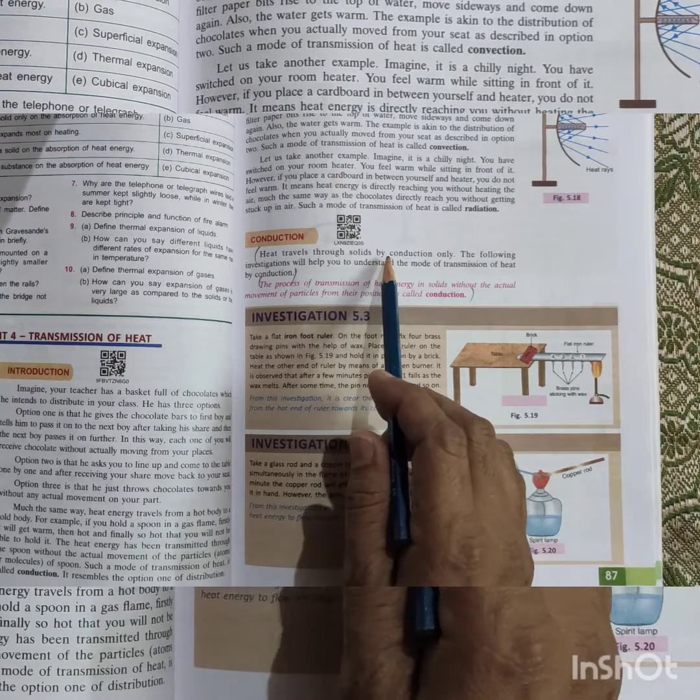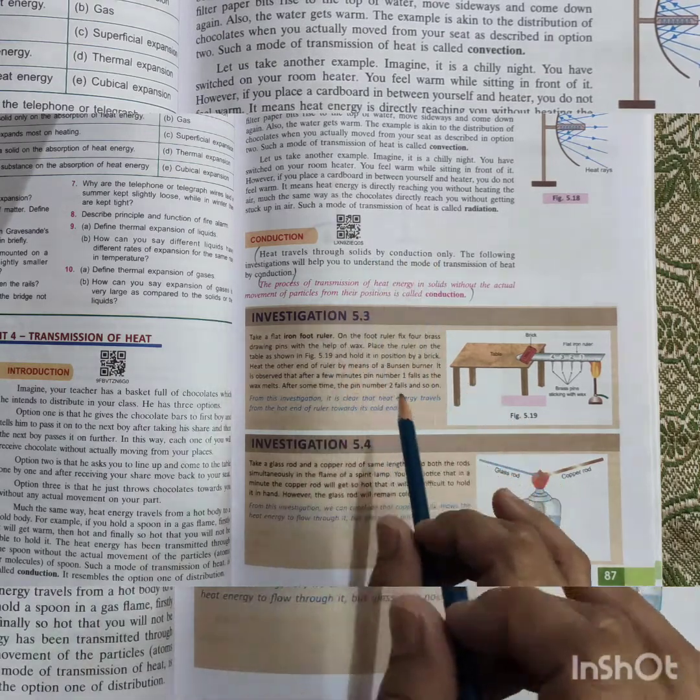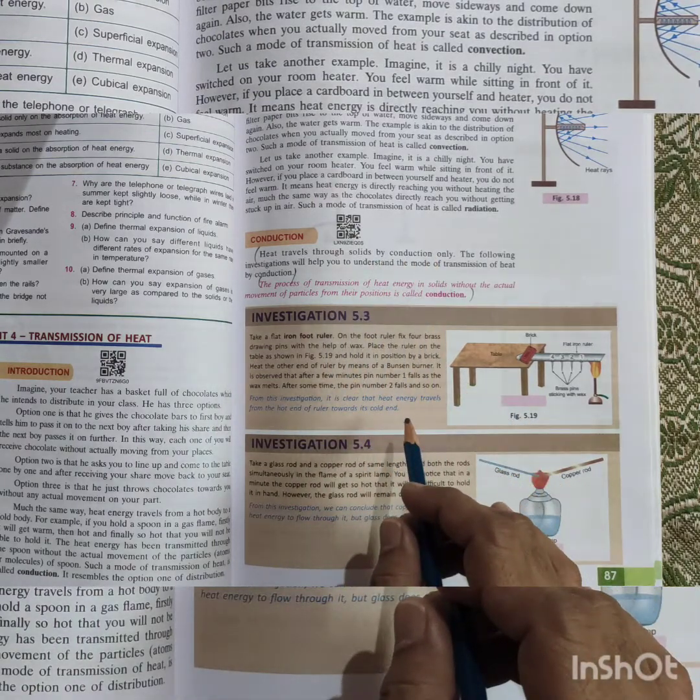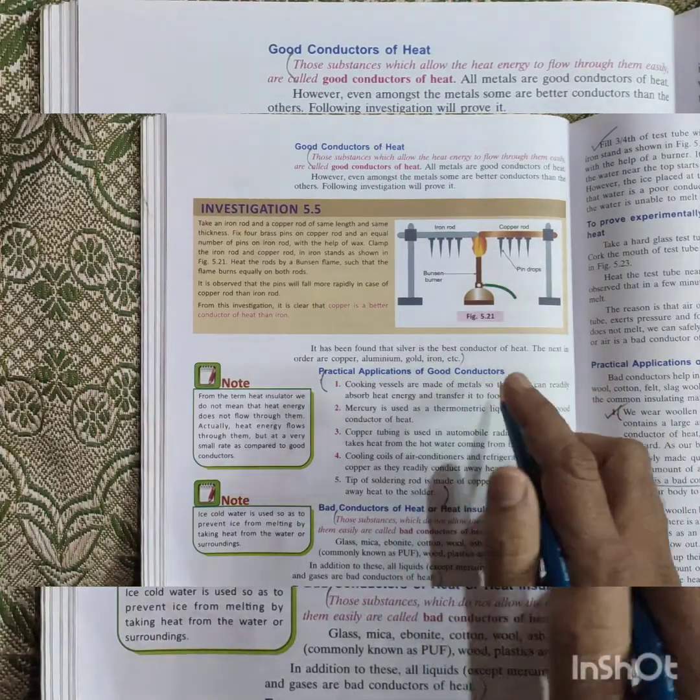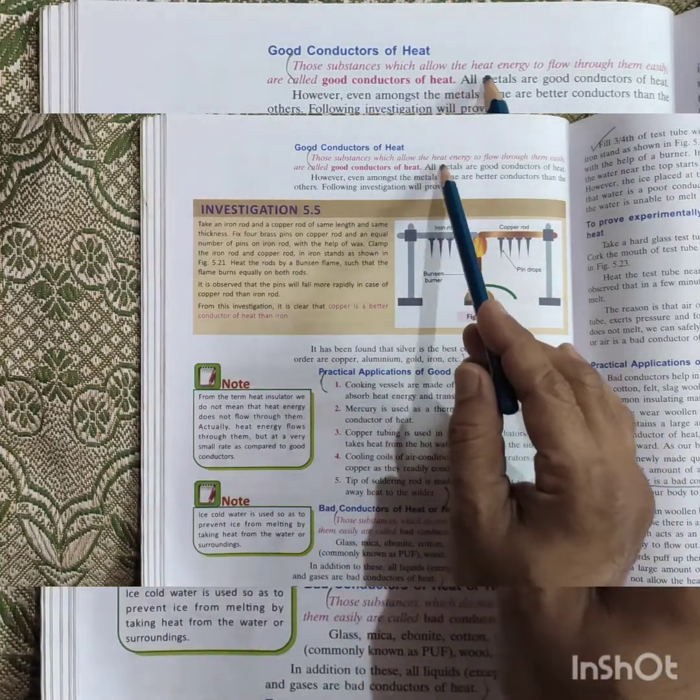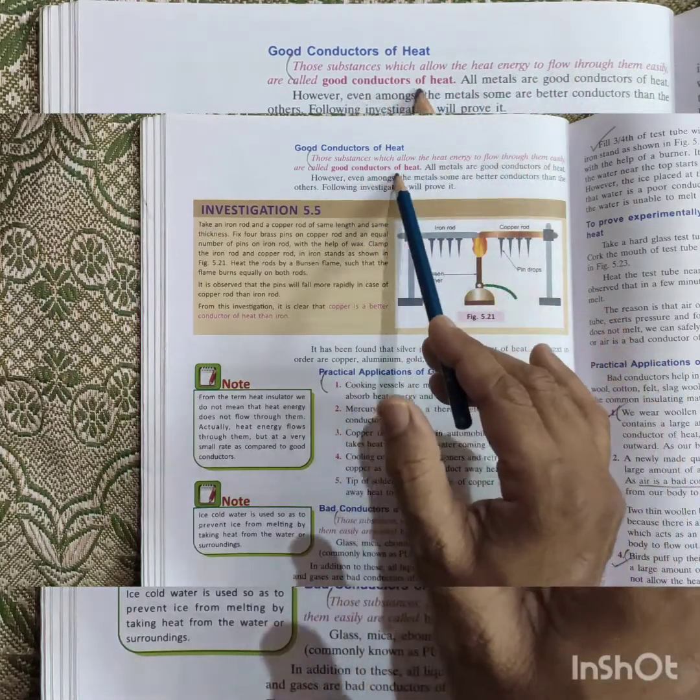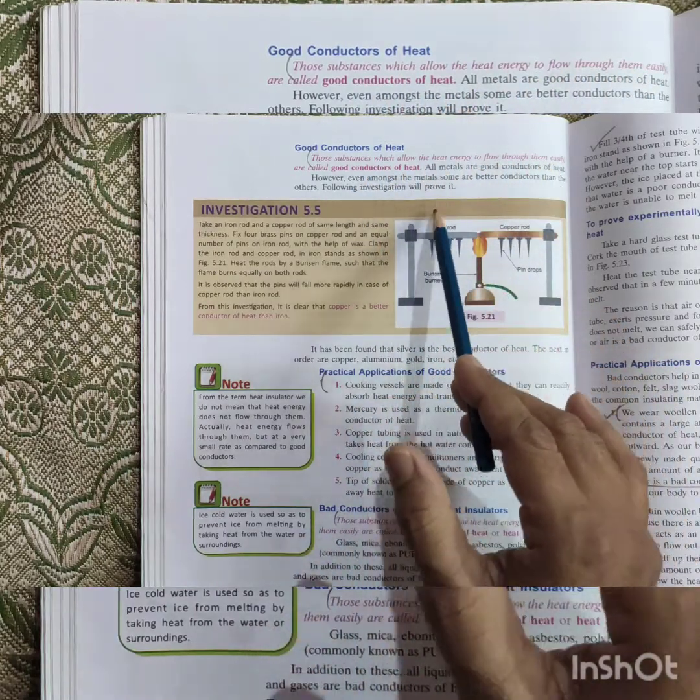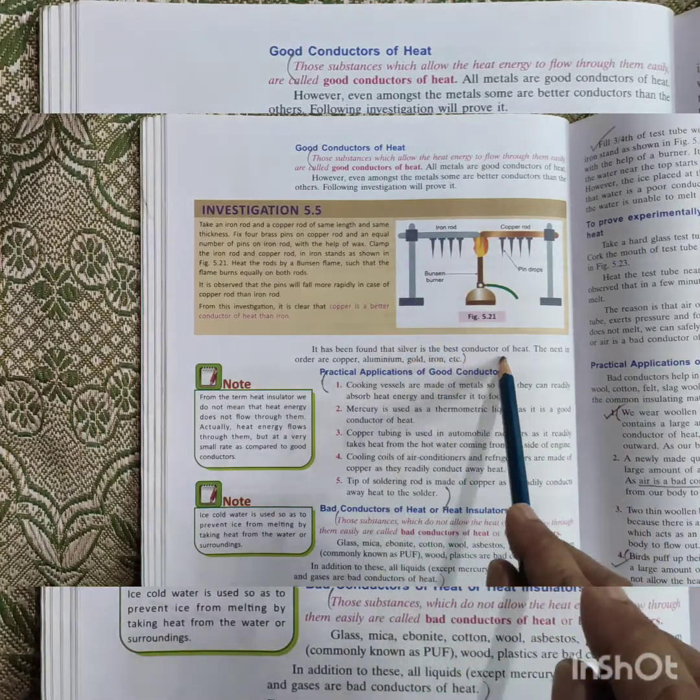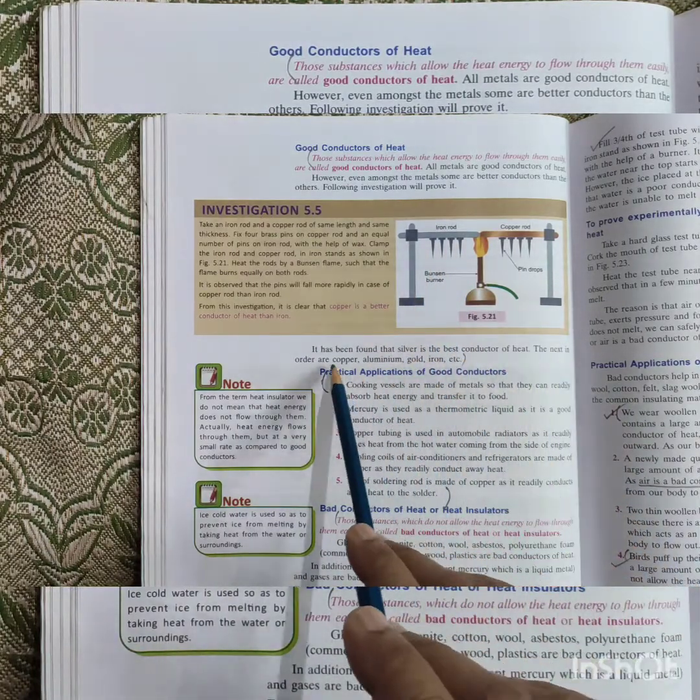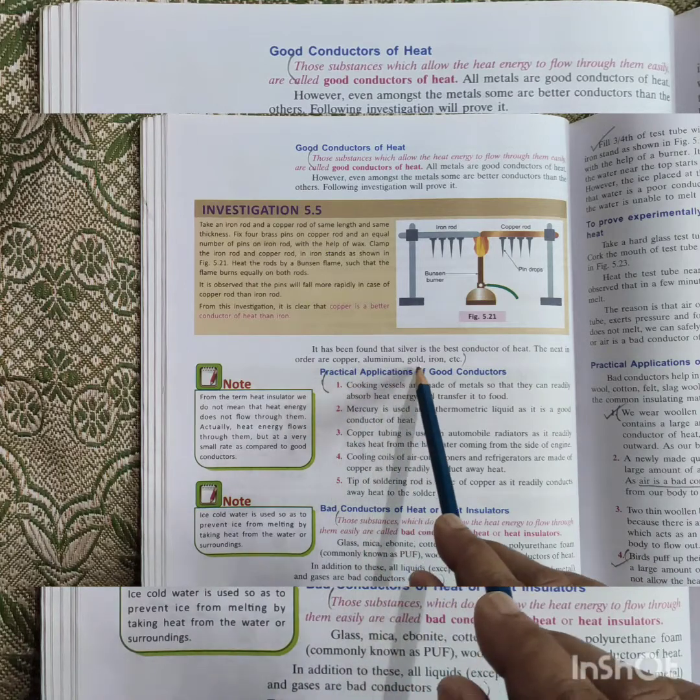Heat travels through solids by conduction only. It is a process valid for conduction only for solids. Next, we have good conductors of heat. Those substances which allow heat to pass through it easily are called good conductors, mostly the metals. Examples: silver is the best good conductor of heat, next is copper, aluminum, gold, iron.